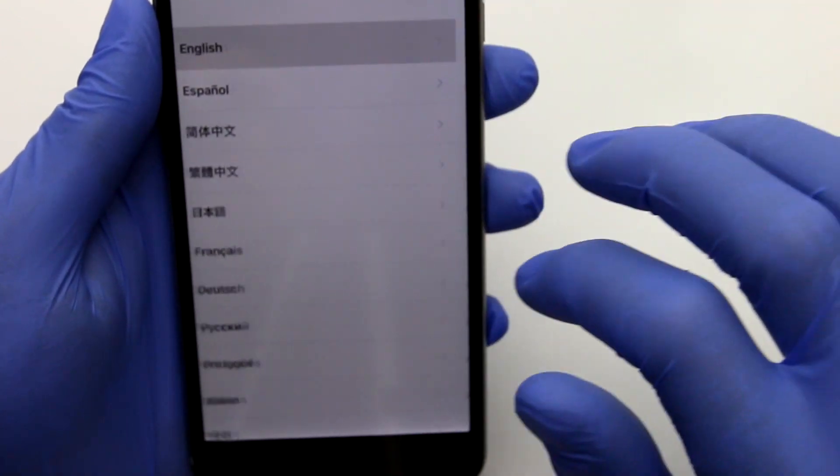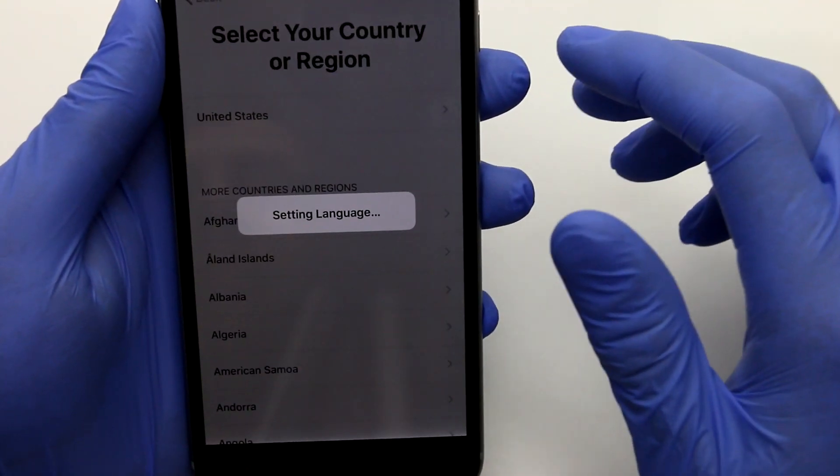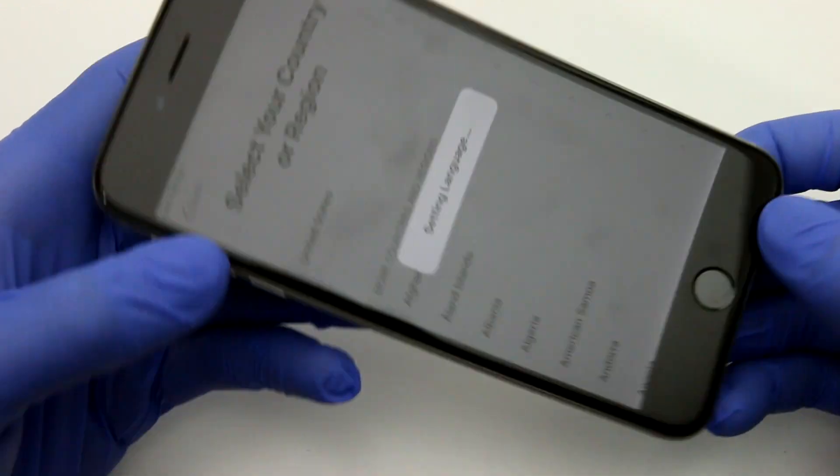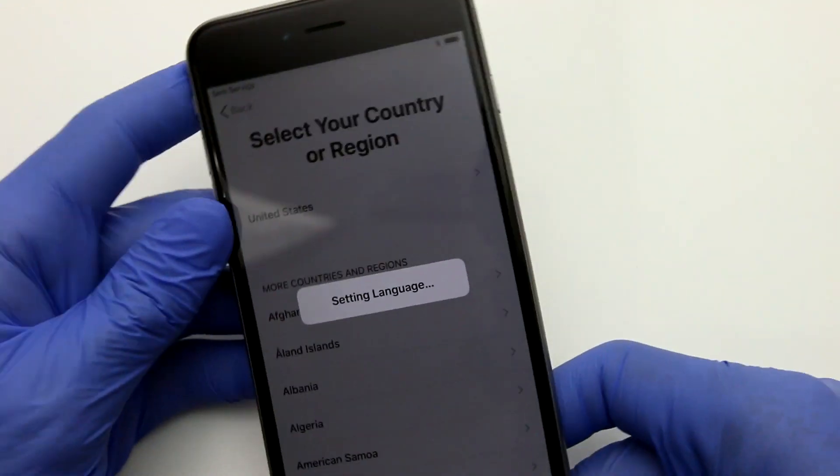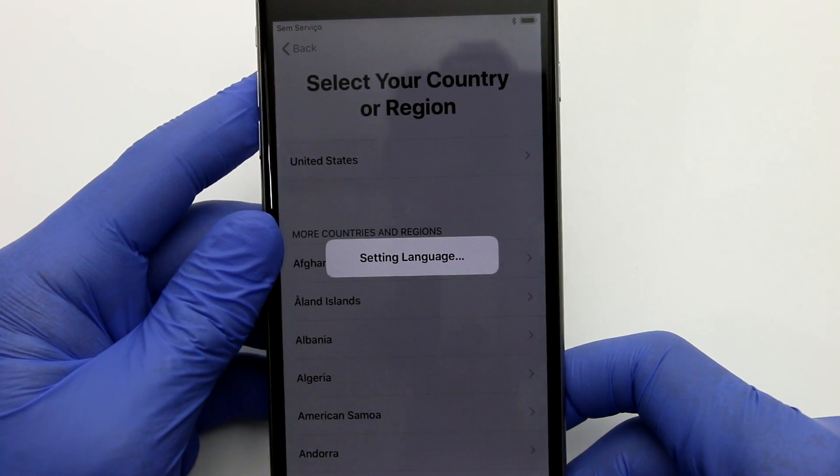Make sure you very carefully test it before you reassemble, before you put back those two pentalobe screws you took out in the beginning. Make sure that the screen is responding to touch at all angles.